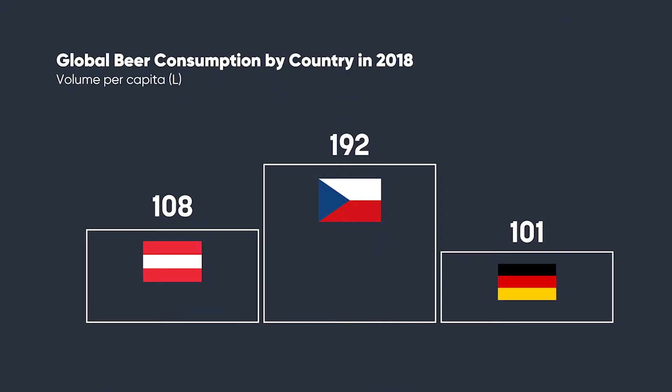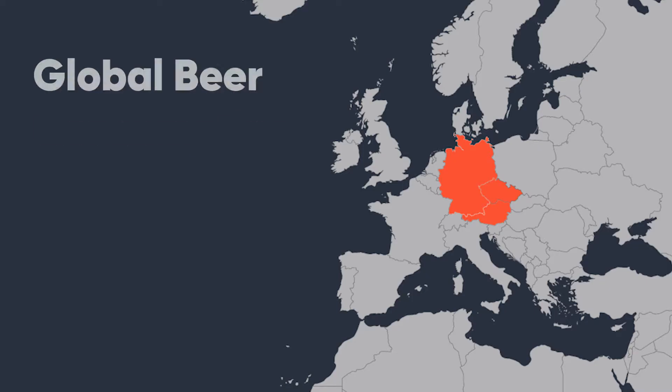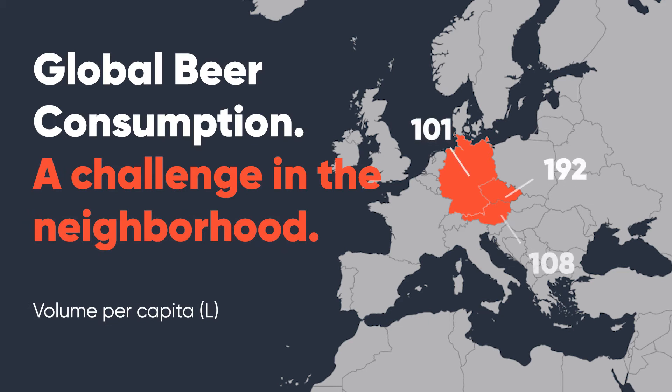So why not highlight just the top three? All three countries border each other. So you could also show the numbers like this: Global beer consumption — a challenge in the neighborhood. This will make it memorable, I am sure.